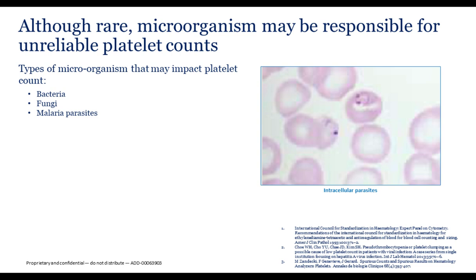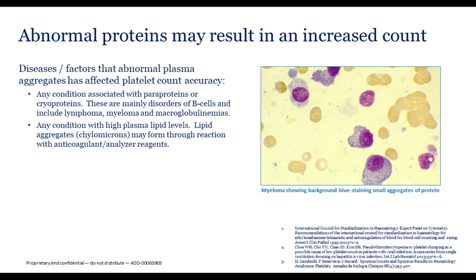Although rare, microorganisms may be responsible for unreliable platelet counts. In smear review, intracellular parasites — such as malarial parasites — can be seen. As red cells hemolyze, the parasites may become free and falsely increase the platelet count. Abnormal proteins may also result in increased counts; diseases associated with paraproteins or cryoproteins — including lymphomas, myeloma, and macroglobulinemia — can impact many platelet counting methods, especially the impedance platelet count.